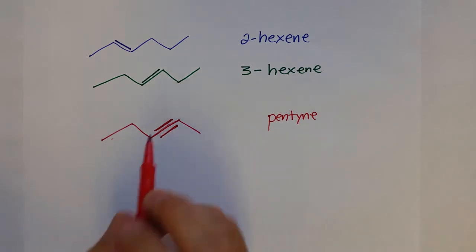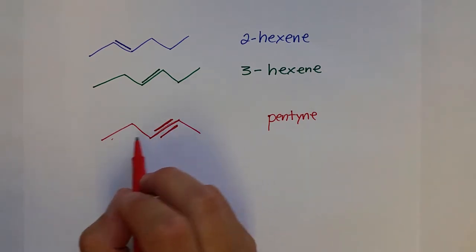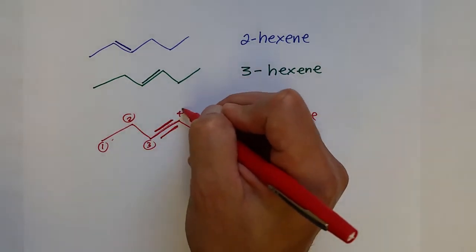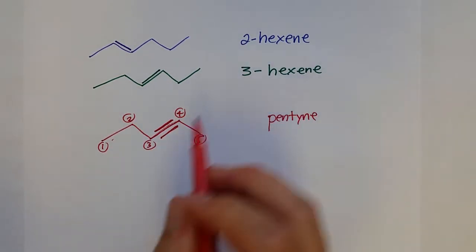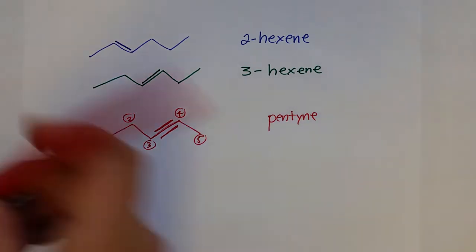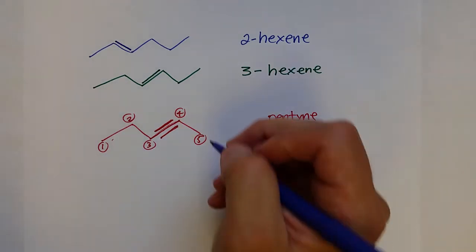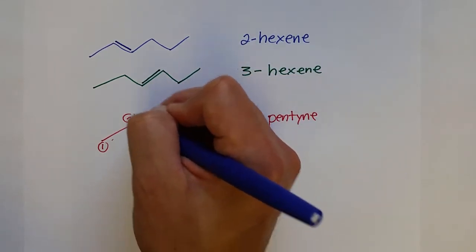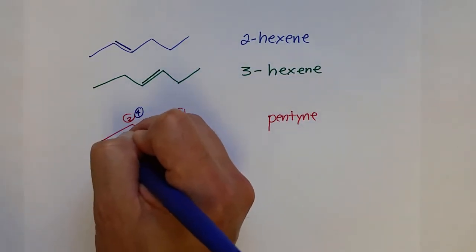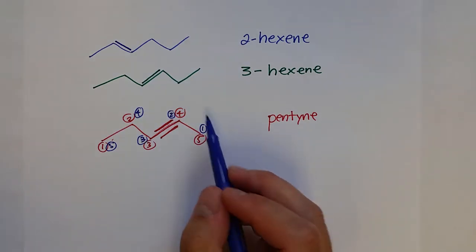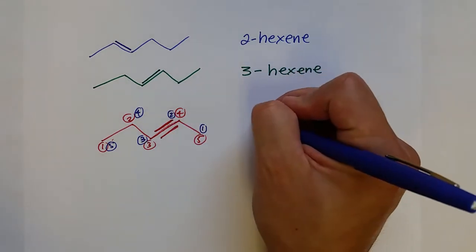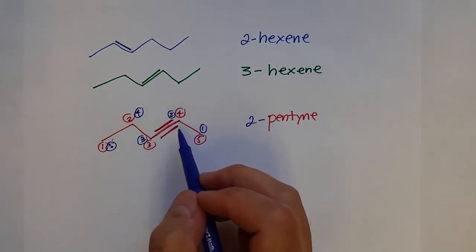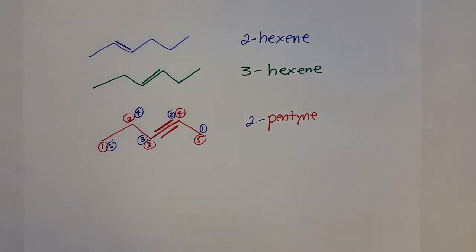We need to indicate where the triple bond is. If we numbered it one through five in one direction, we'd get 3-pentyne — but that's incorrect. We always want the lowest possible number, so numbering from the other end gives us 2-pentyne, which is the correct name.